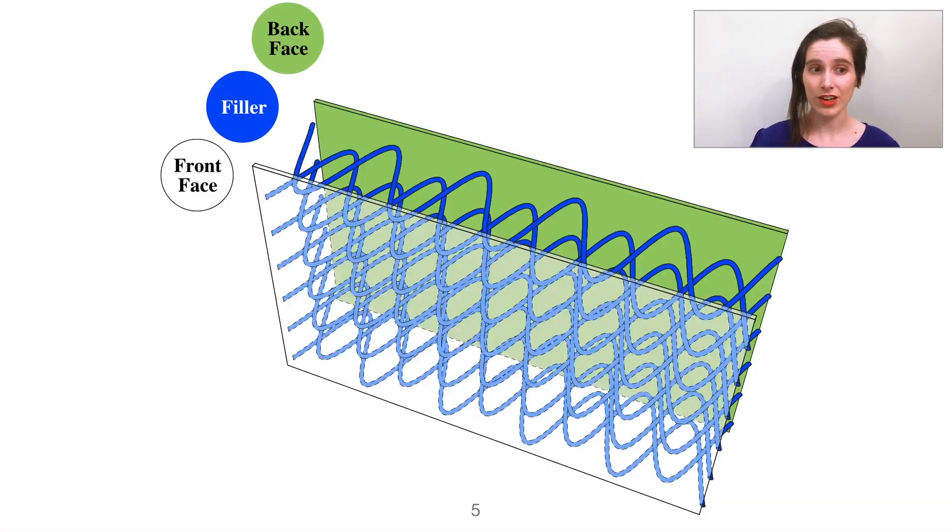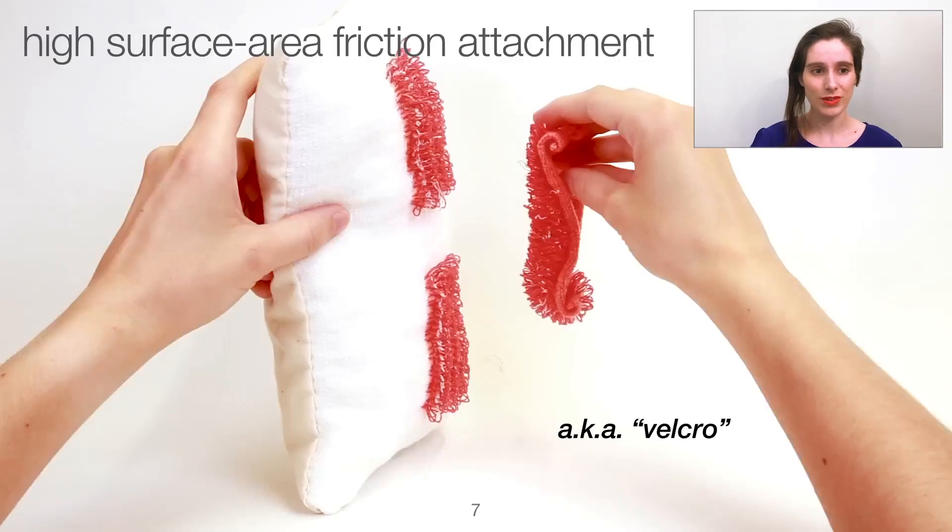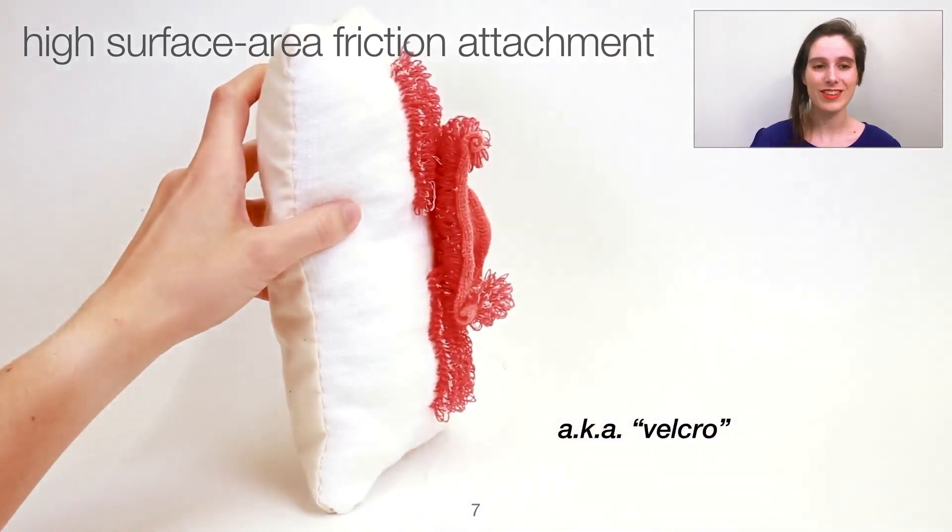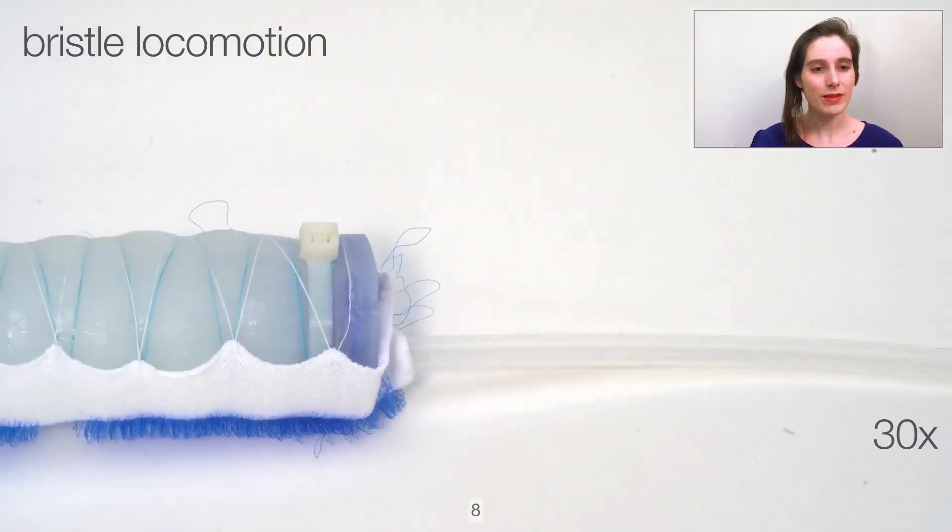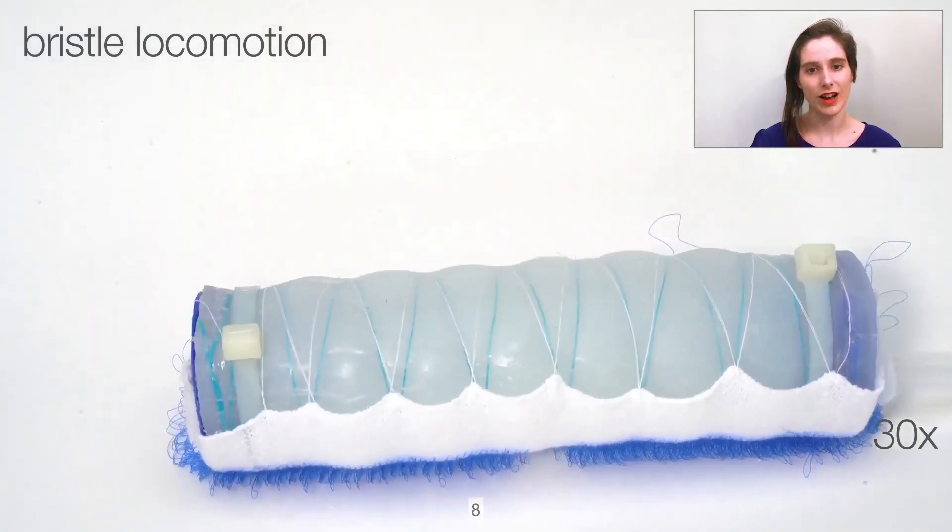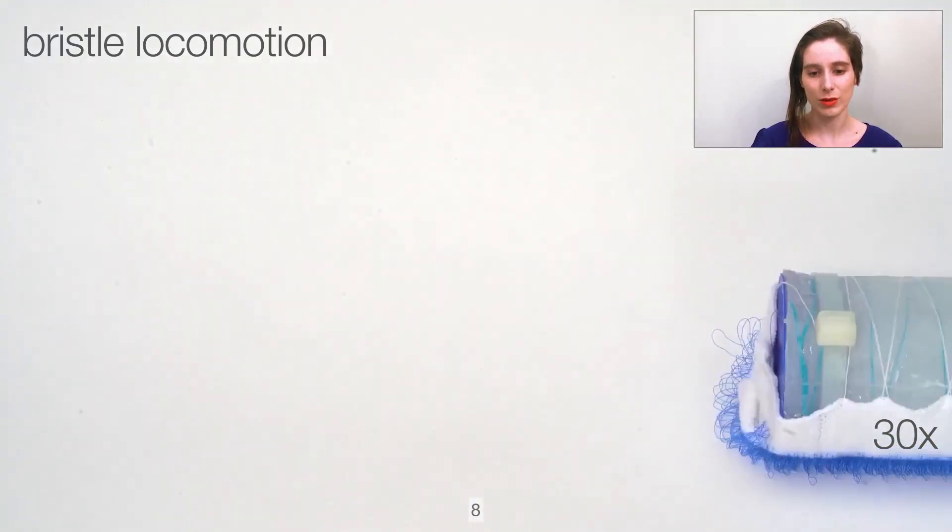Or the same structure can have one face removed and be turned into sort of an open face sandwich which we call a bristle structure. This can be used for applications including high surface area friction attachment points, or in other words velcro, and biasing motion inputs. So in this case the bristles are acting as a kind of ratchet to convert a pneumatic expansion and retraction cycle into forward locomotion.